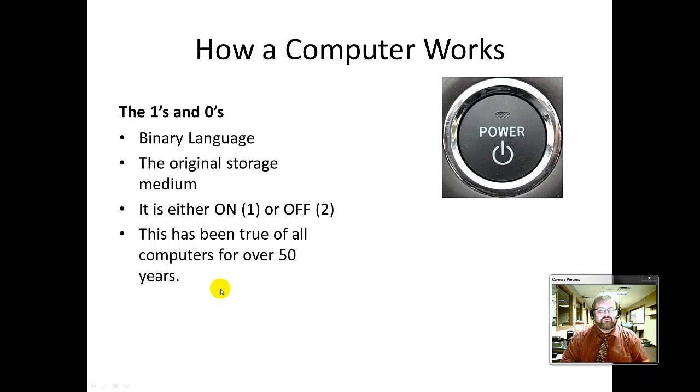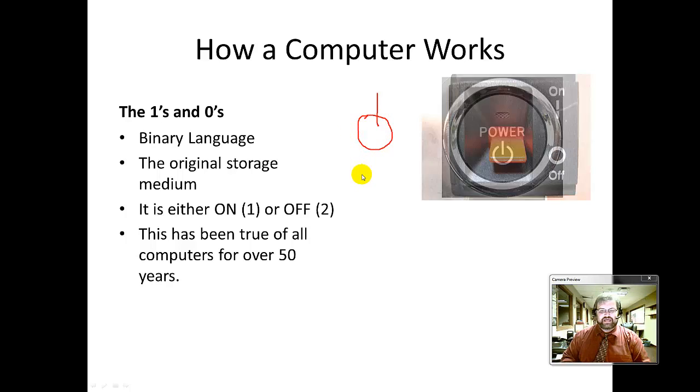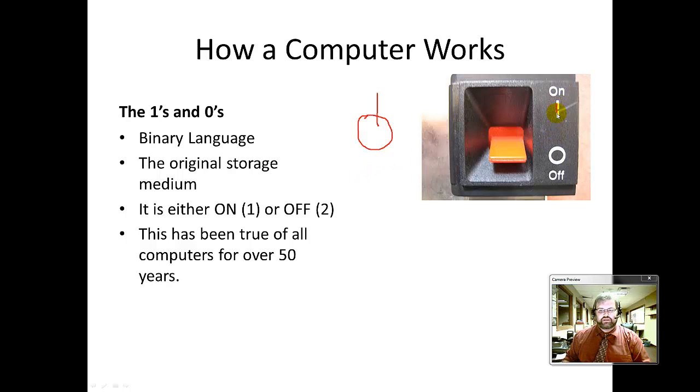Because it's so simple, it was easy for us to create a machine that could recognize something being on or off. And if we put enough of those things that are on or off together, we can create entire languages. In fact, the power button on a computer is a tribute to the binary language. It's a one and a zero, letting us know that something is either on, one, or off, zero.